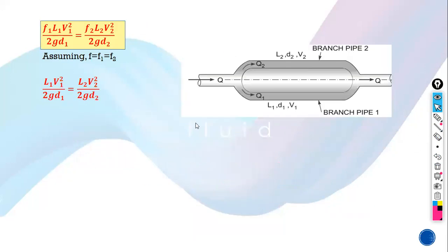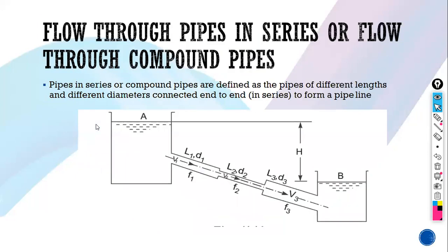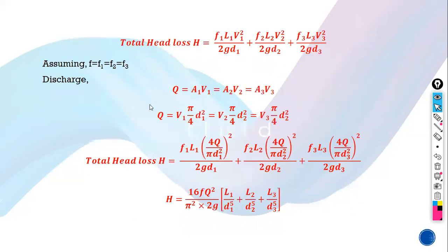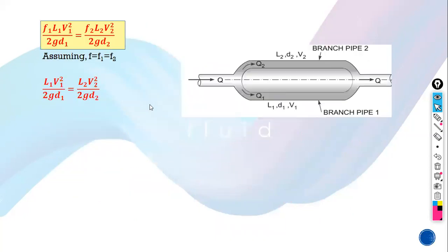The equation for equal head loss gives: f1l1v1²/(2gd1) = f2l2v2²/(2gd2). Assuming friction factors are equal, this simplifies to l1v1²/d1 = l2v2²/d2. To summarize today's lecture, we covered three things: flow through pipes in series (compound pipes), equivalent pipe or Dupit's equation, and flow through parallel pipes.